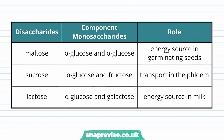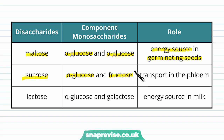Here's a summary of the disaccharides. Maltose is composed of alpha glucose and alpha glucose, and is the energy source in germinating seeds. Sucrose is made of alpha glucose and fructose, and is transported around the phloem of plants. Lactose is made of alpha glucose and galactose, and is the energy source found in milk.